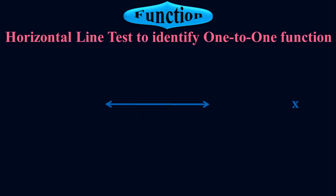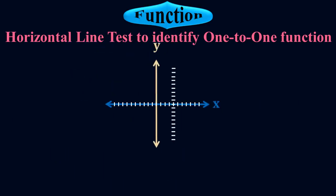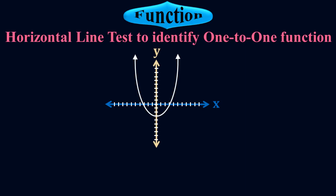Let me do one more example where the graph is an upward parabola. First, check whether it is a function. Let me apply the vertical line test. All the vertical lines pass through single points here — it's a perfect function.